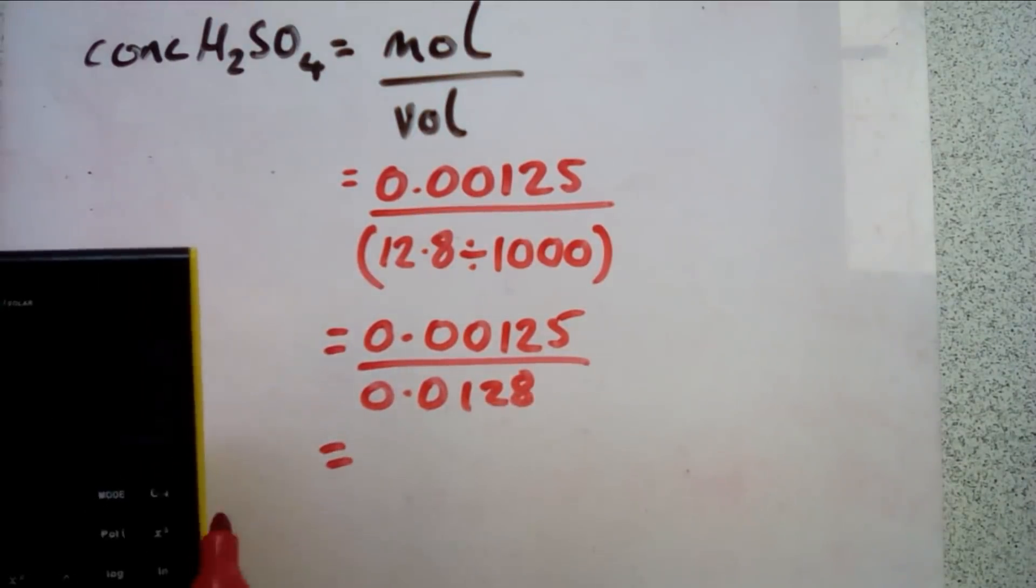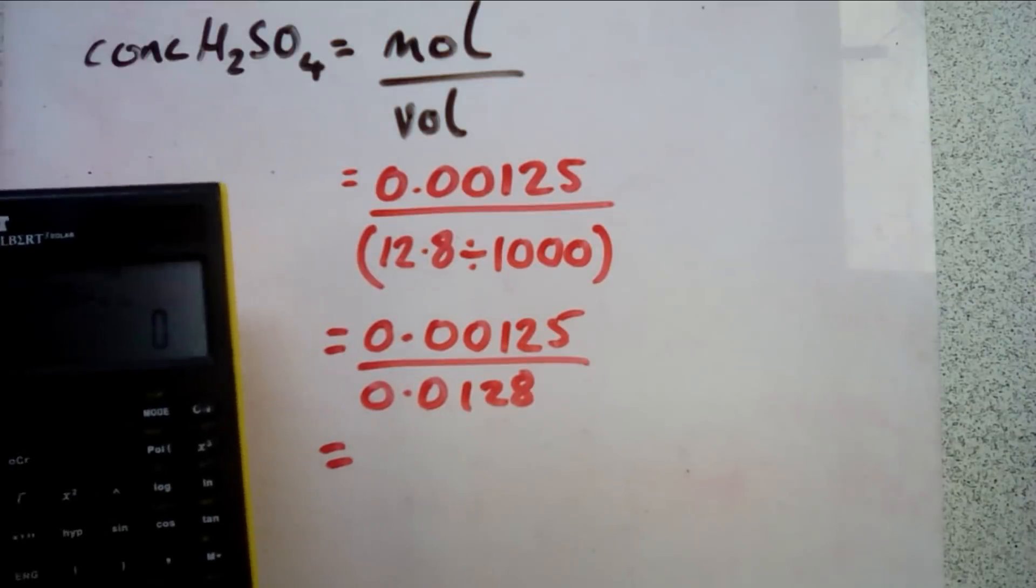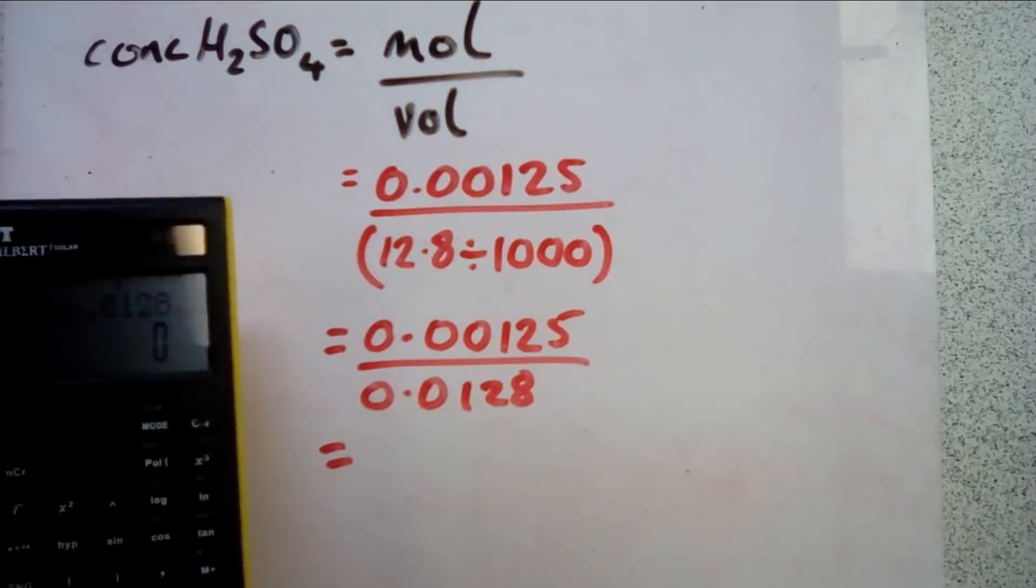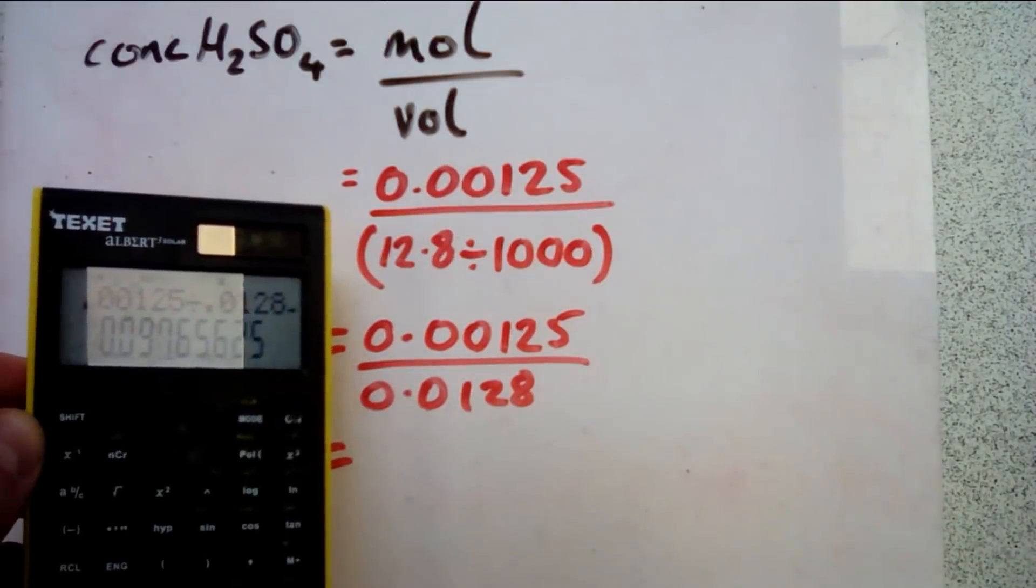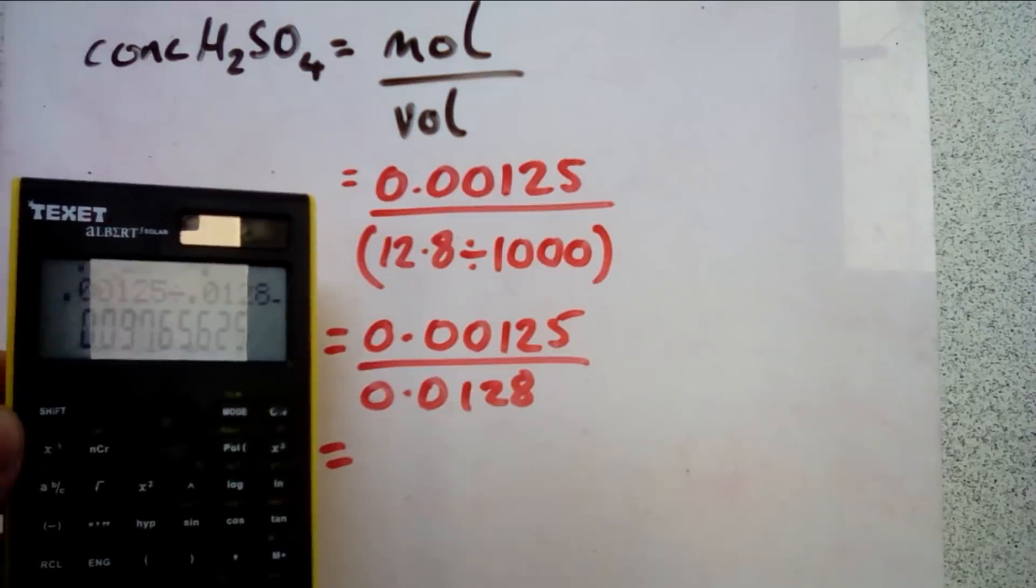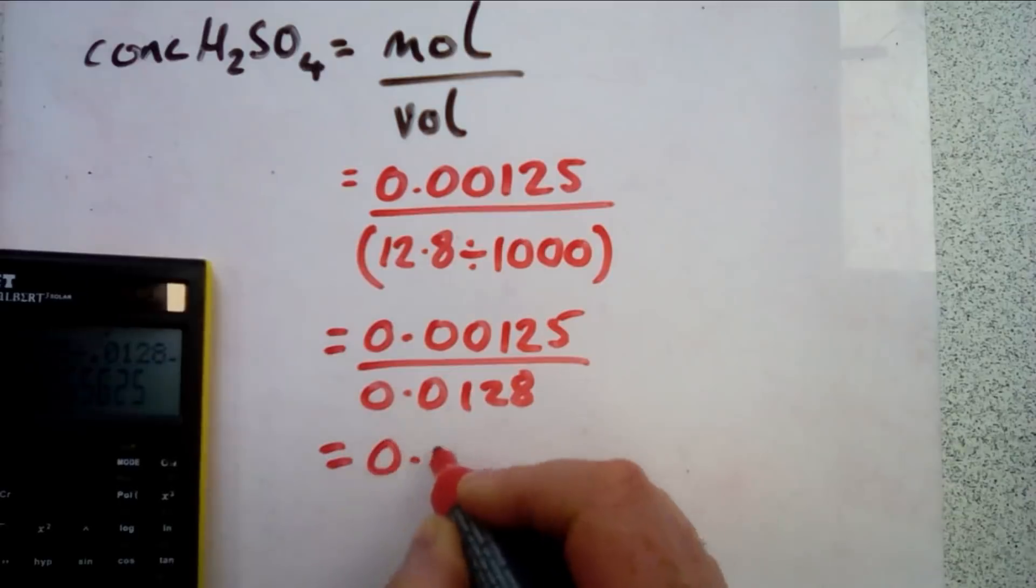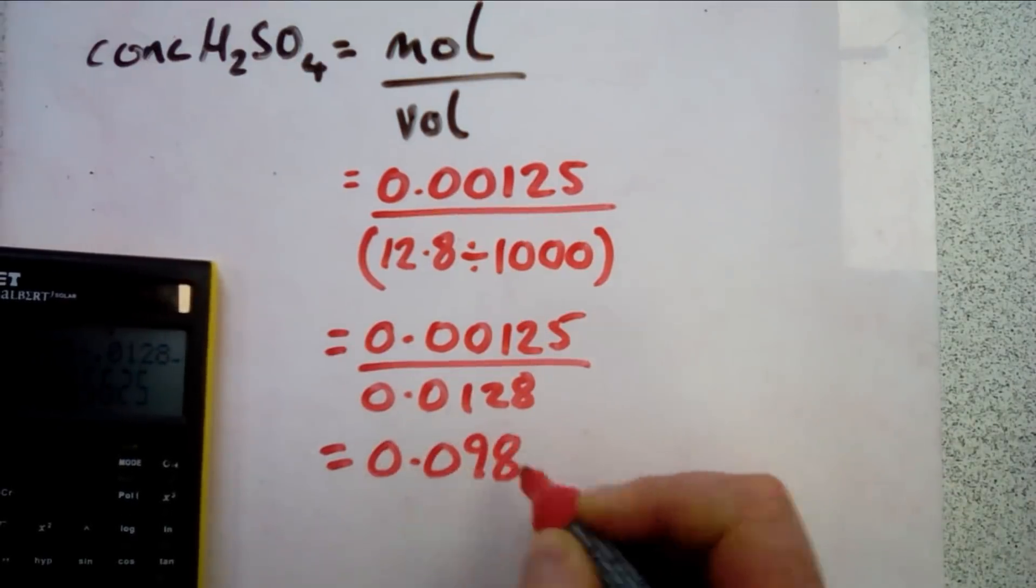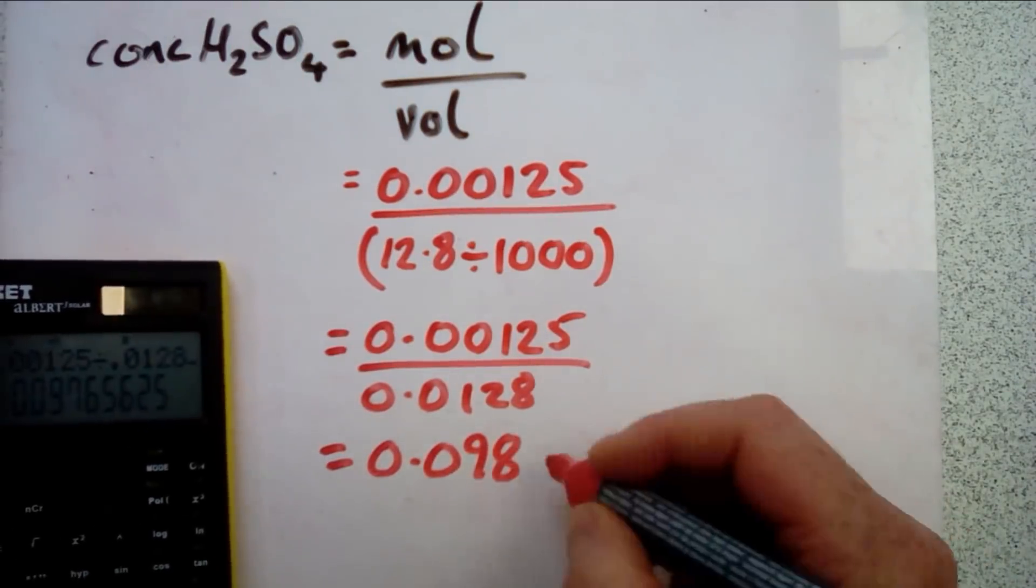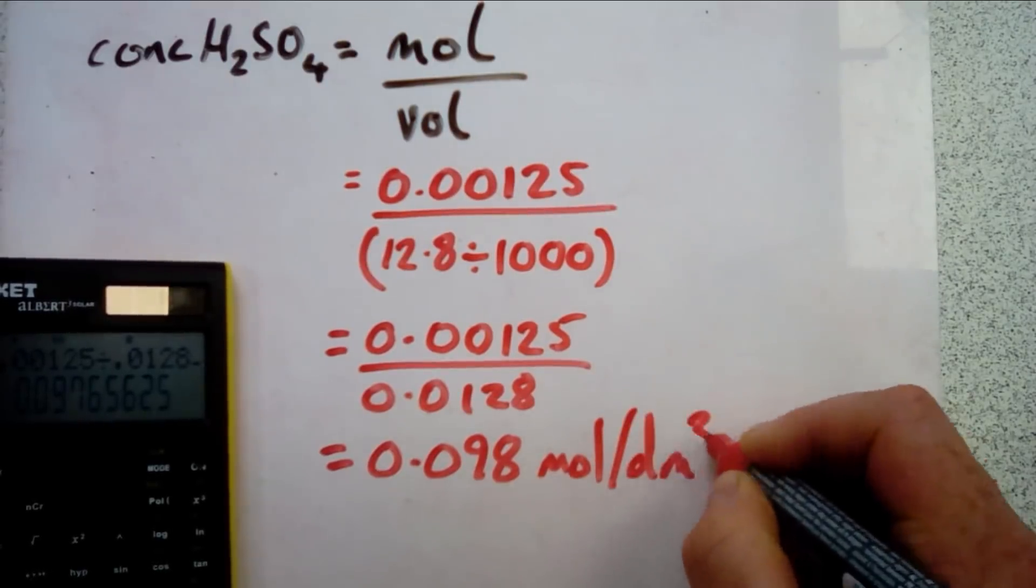Now back to our calculator again. That gives us an answer of 0.09765625. We don't want all those decimal places, so we'll go to 0.098. Don't forget our units, that's moles per decimeter cubed.